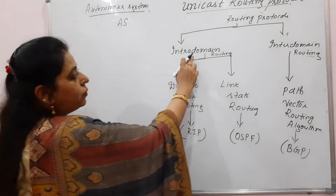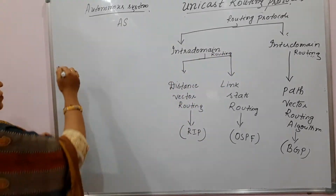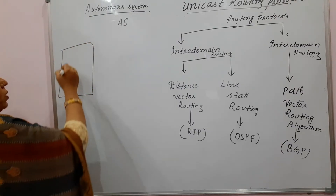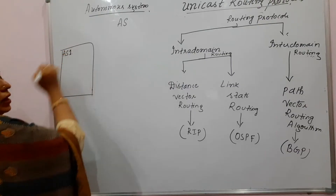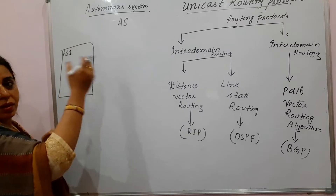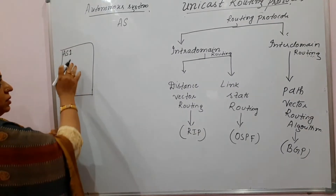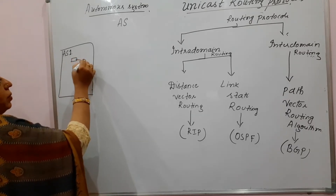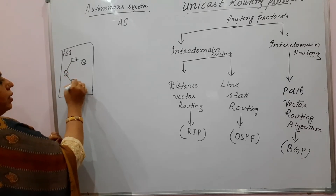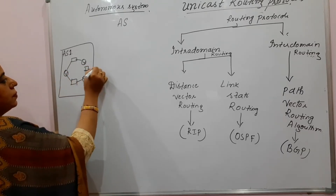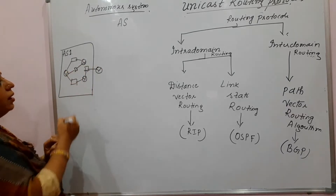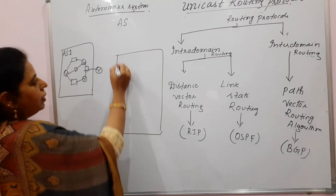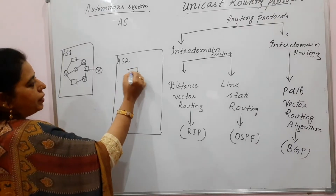To explain intra-domain and inter-domain routing, let me illustrate here. Let me take one autonomous system — AS1. The internet is divided into different autonomous systems, and each autonomous system consists of a collection of networks connected with each other. Here is another autonomous system — a bigger one — AS2, also with different networks.